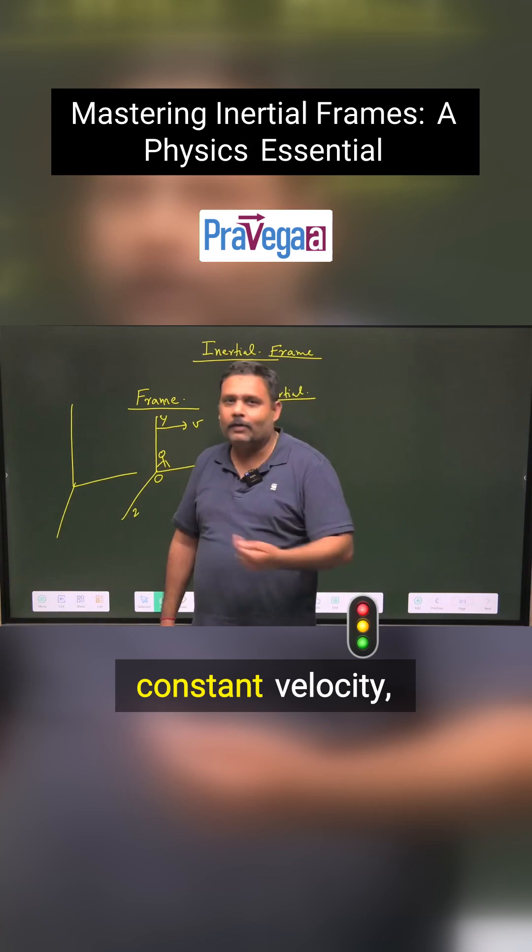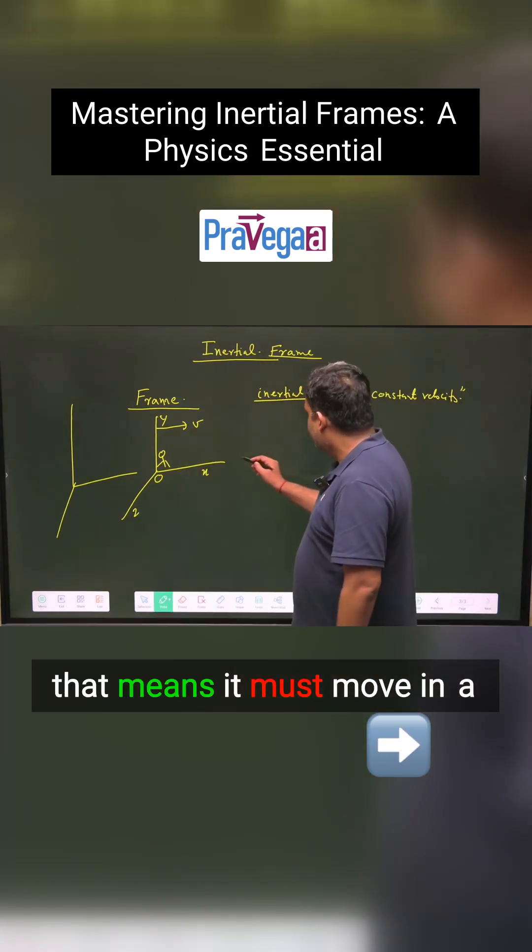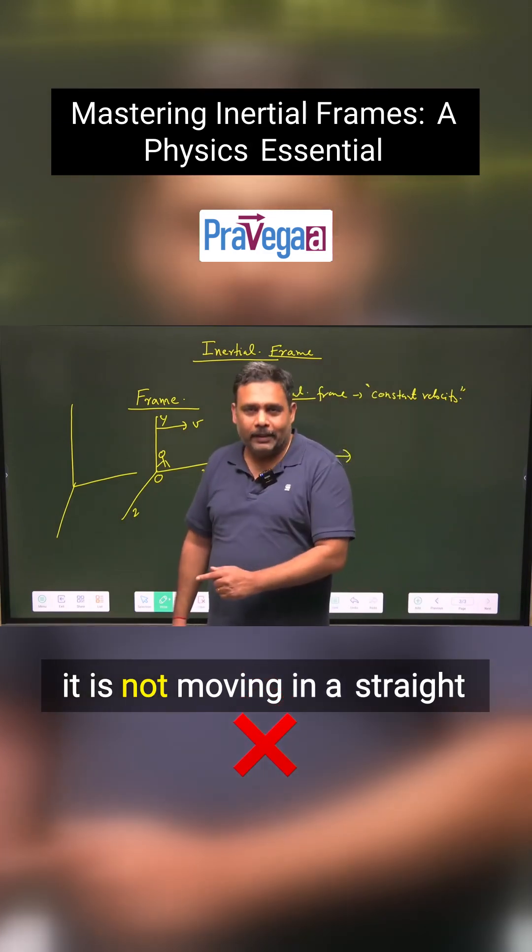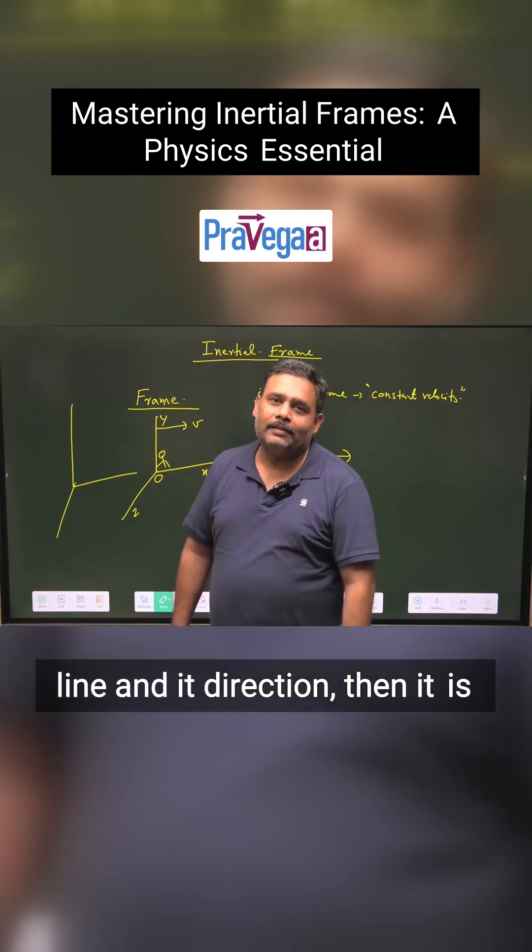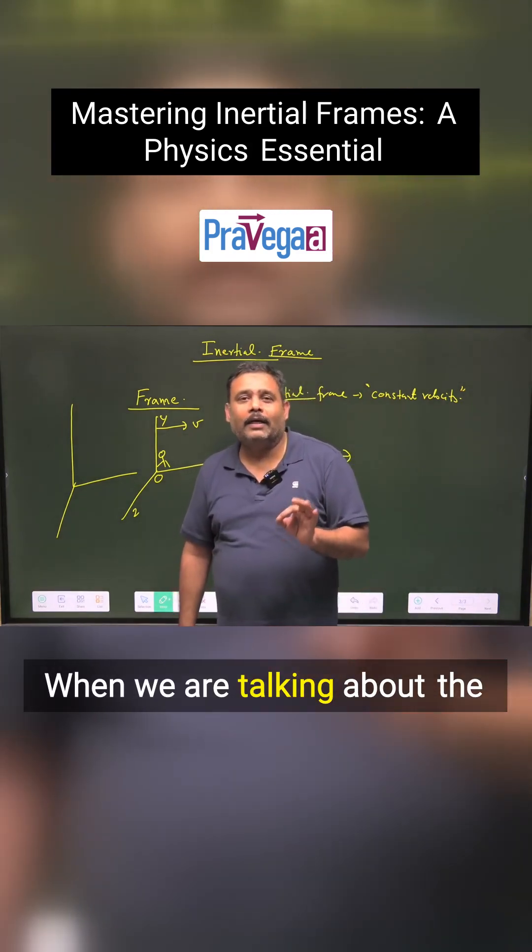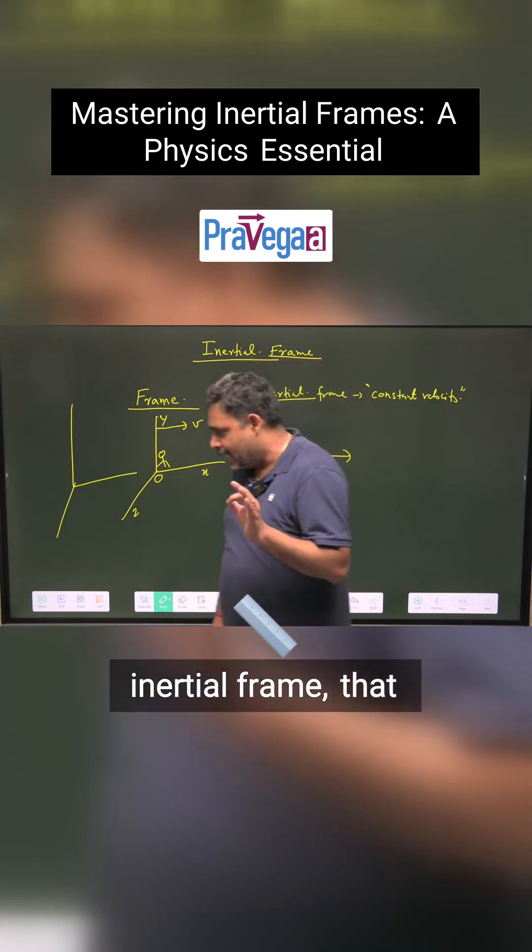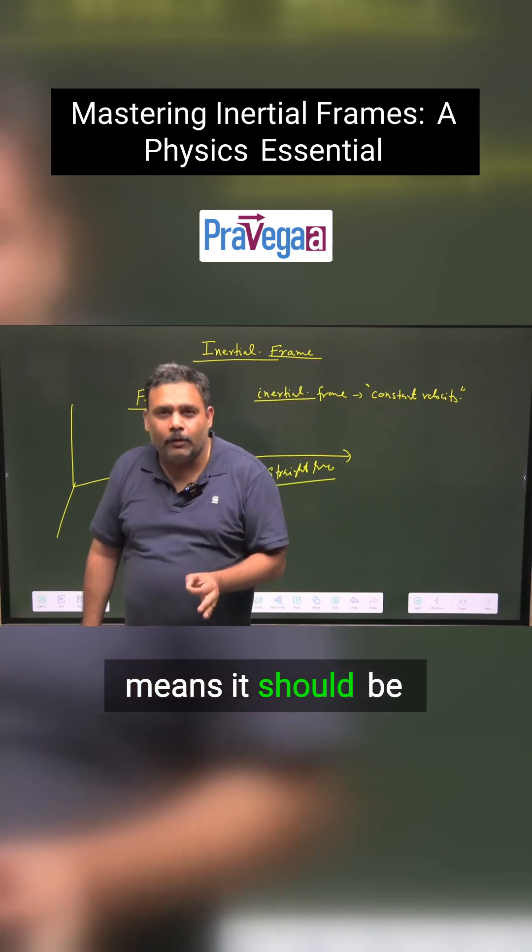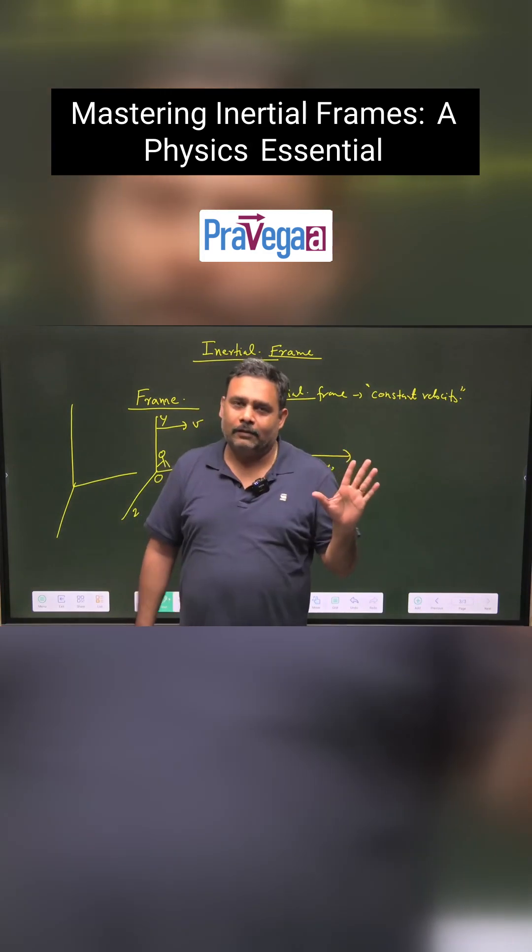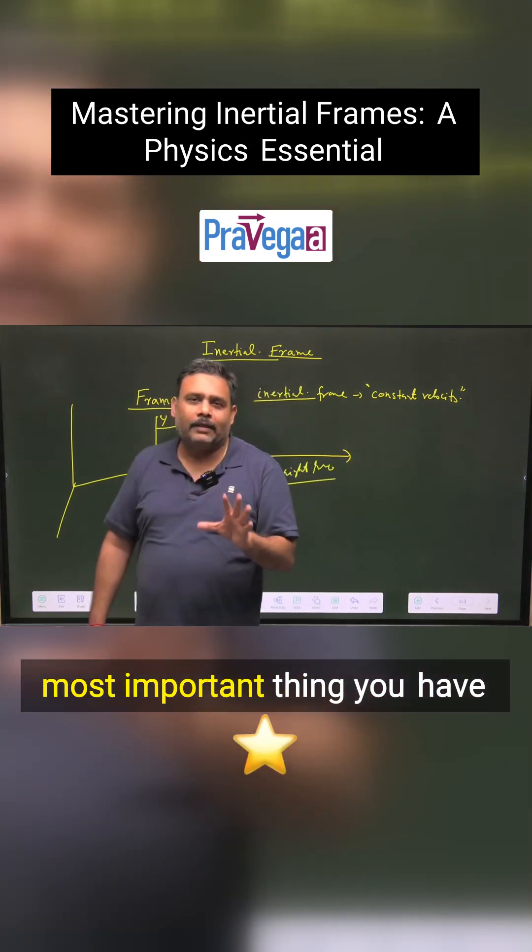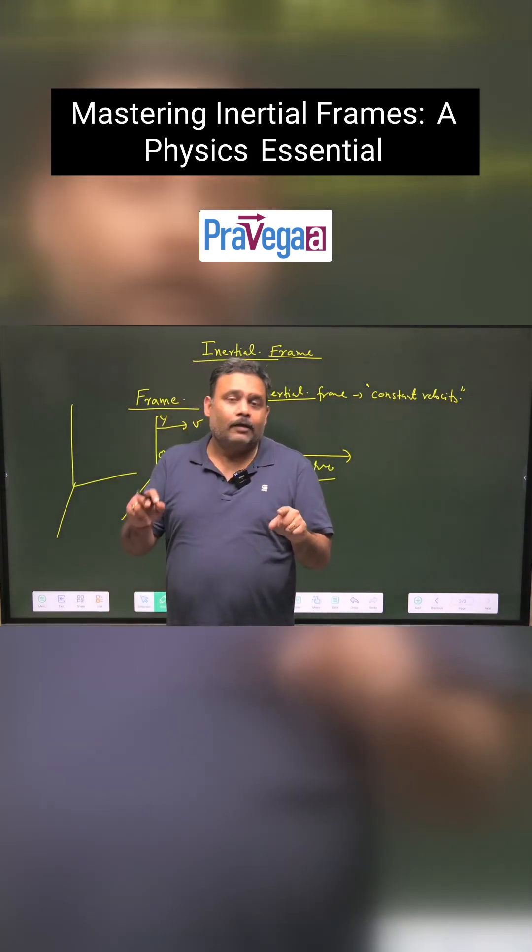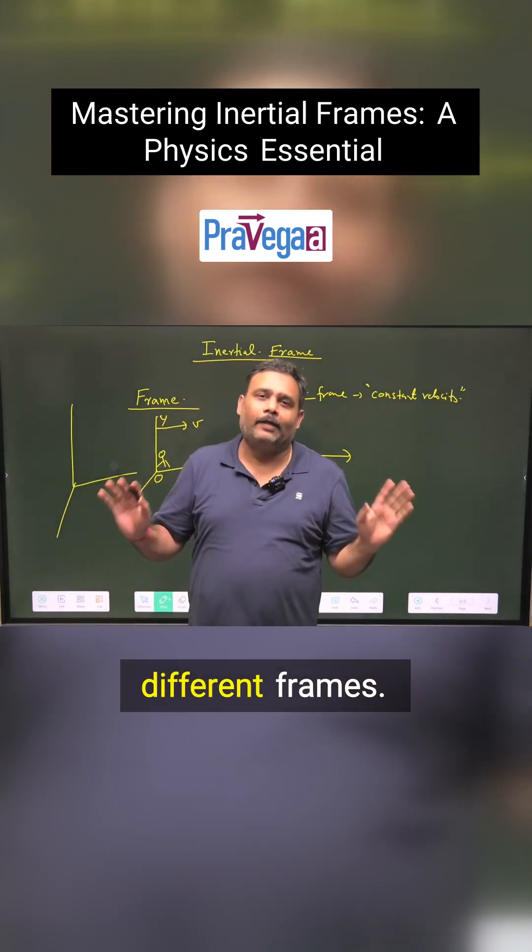And if there's constant velocity, that means it must move in a straight line, because if it is not moving in a straight line, then it is accelerated. When we are talking about inertial frames, that means they should be non-accelerated with constant velocity. This is the most important thing you have to assume. And once you want to see the motion, you have to define two different frames.